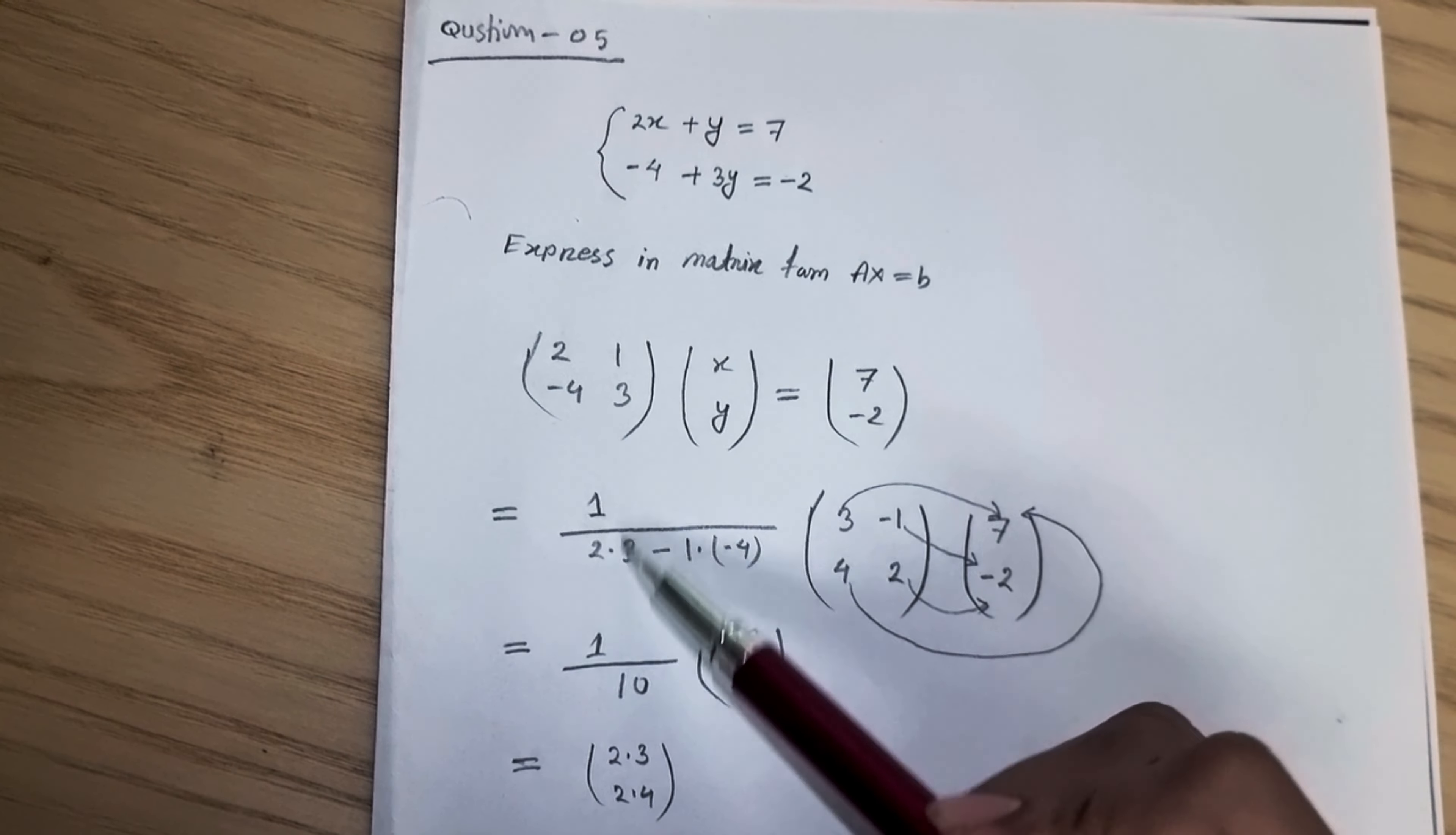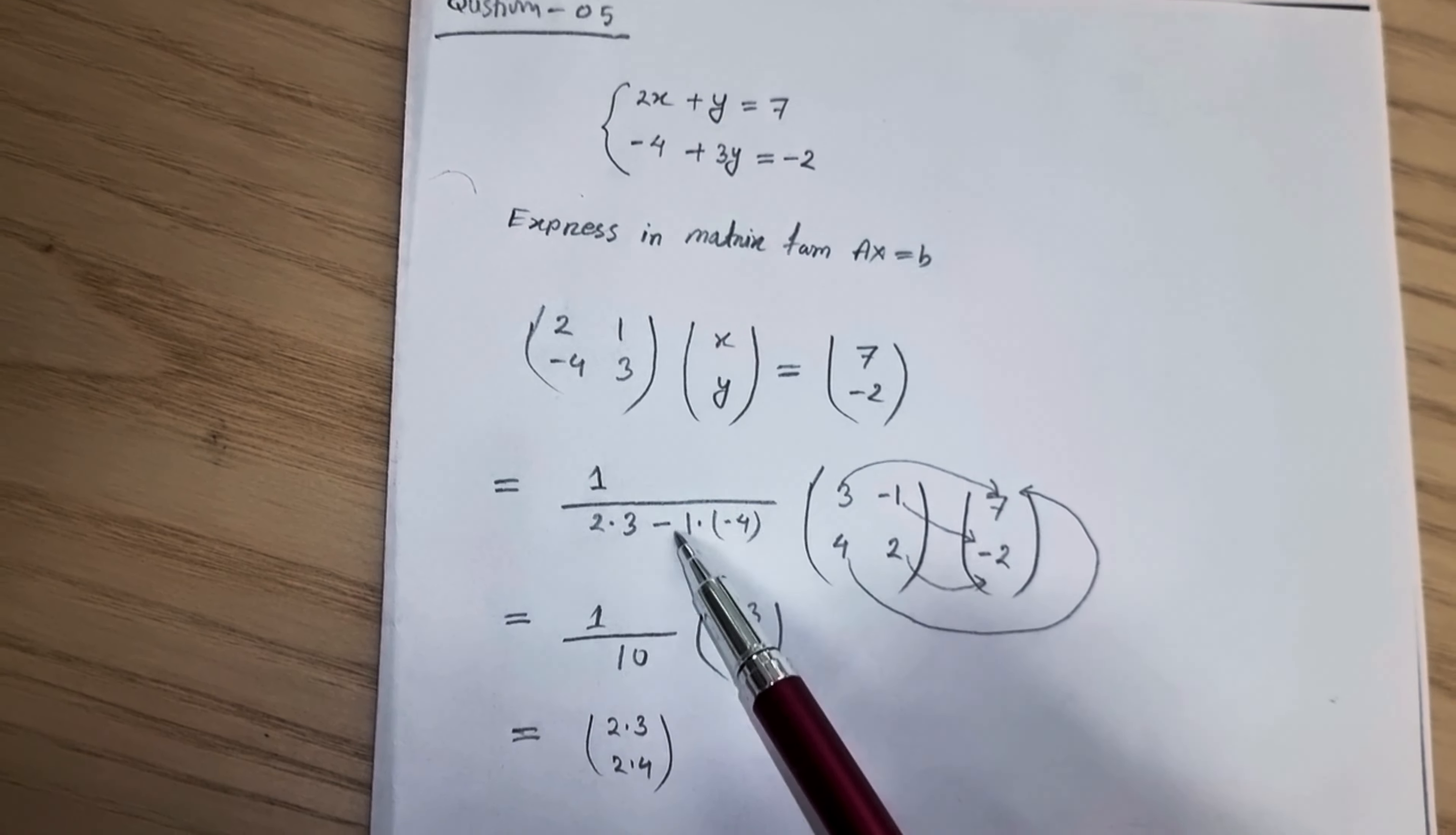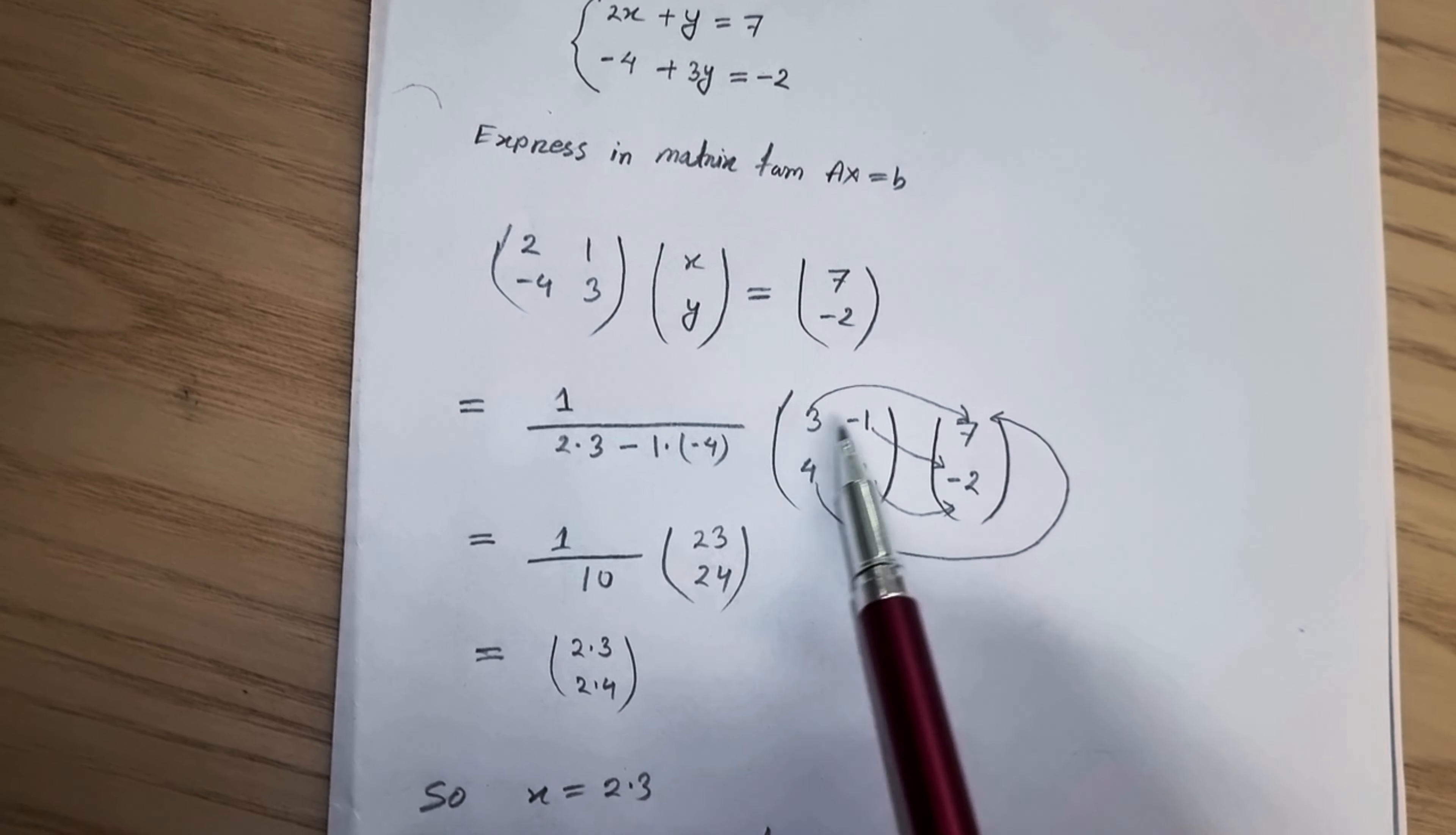So we can calculate like this way: 2 into 3 and minus 1 into minus 4, this calculation. And we can change our matrix like column to row. I mean 3, 1 and we can see this column here is in row: 3 and minus 1, and here is minus 4 and minus 2.